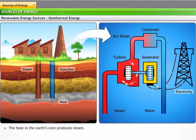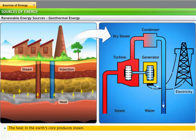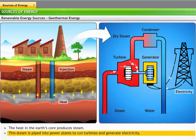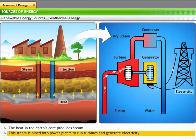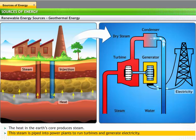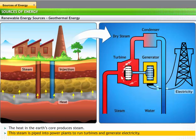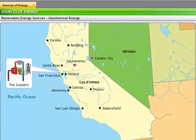Geothermal energy is derived from steam produced due to extreme heat in the Earth's core. This steam is channeled into power plants to run turbines and generate electricity. Sometimes, a deep well called an injection well is used to pump water into the heat pocket and pressurize the steam up to the power plant. The world's largest geothermal power plant, the Geysers in California, USA, has been in operation since 1924.